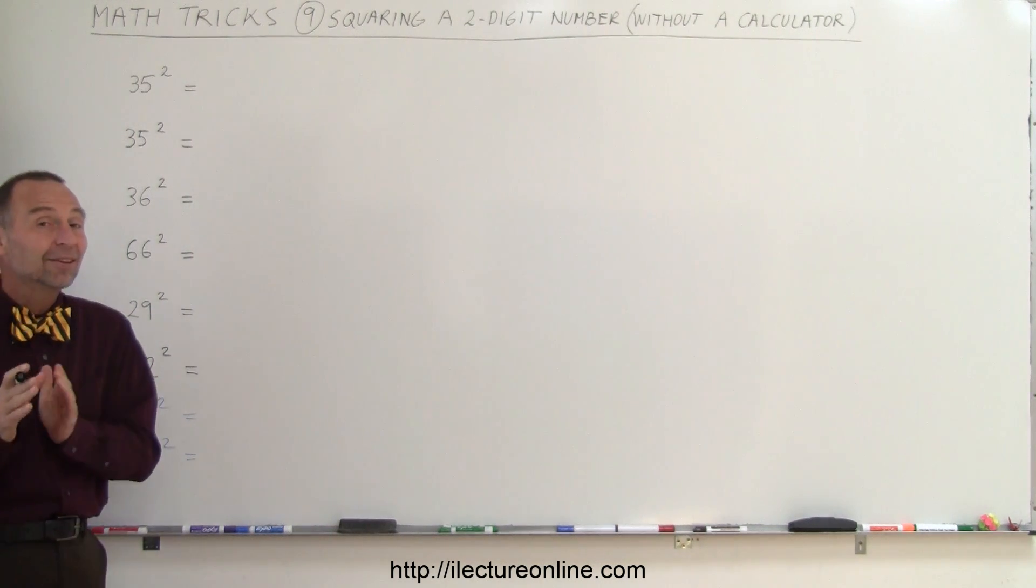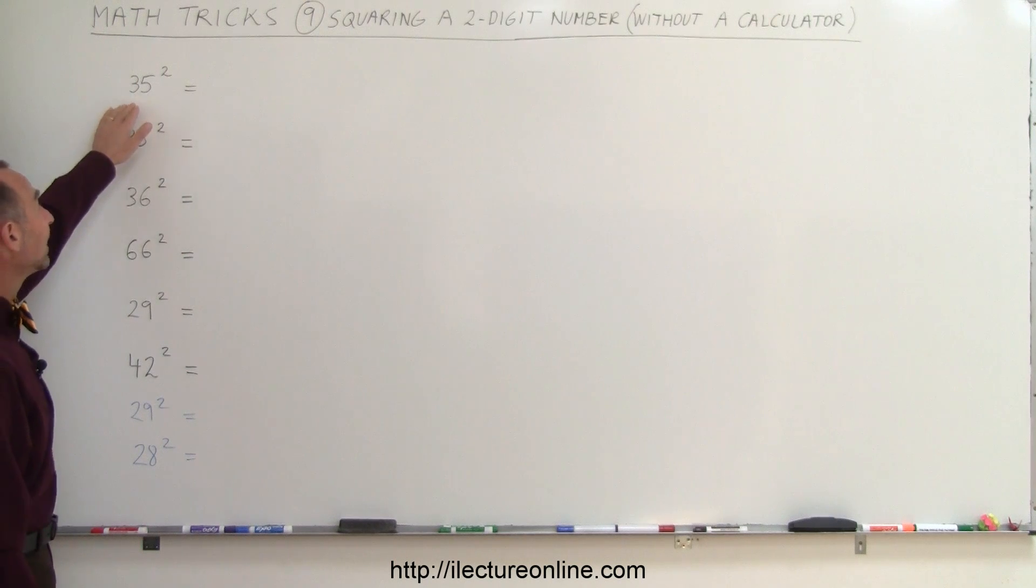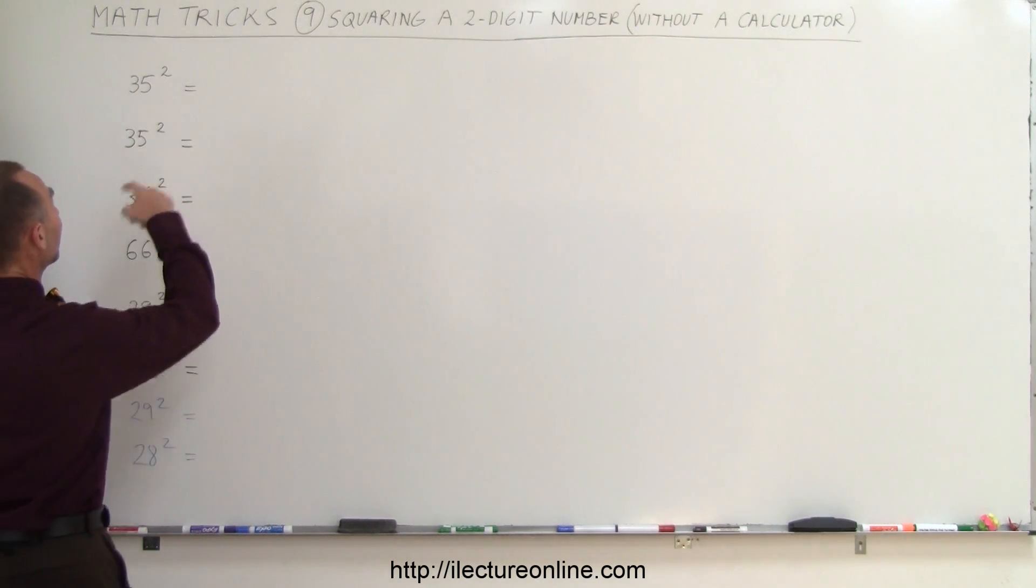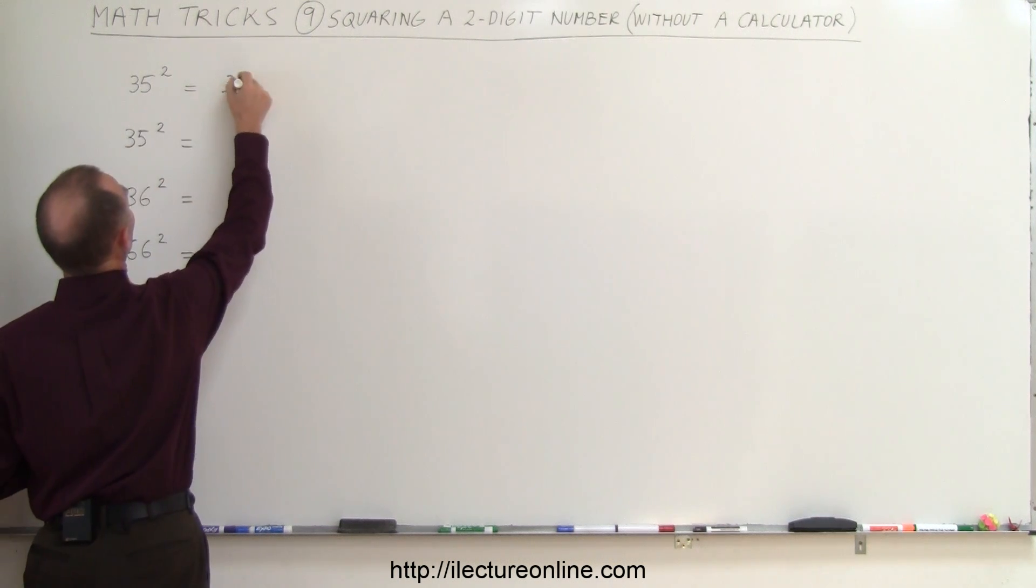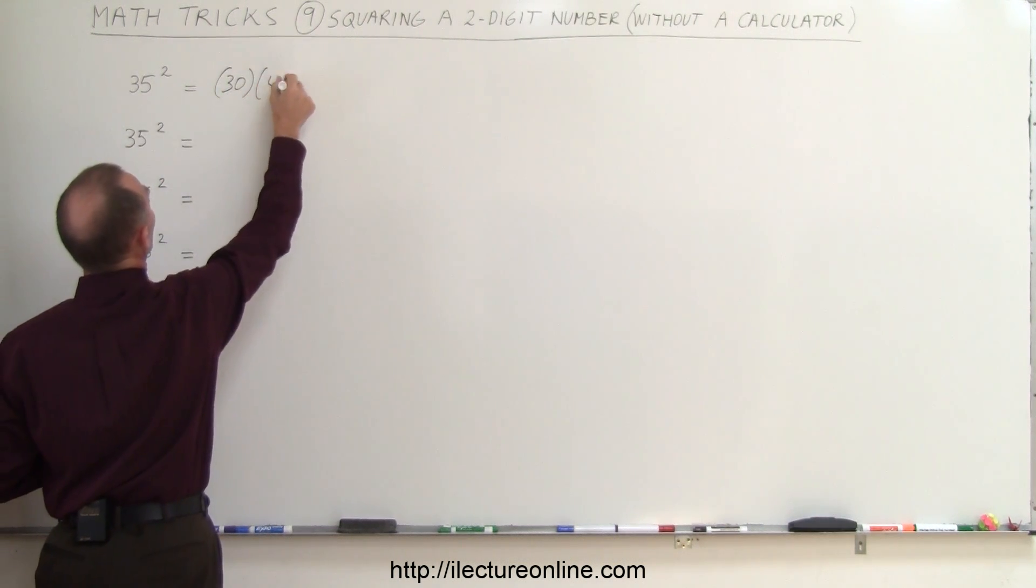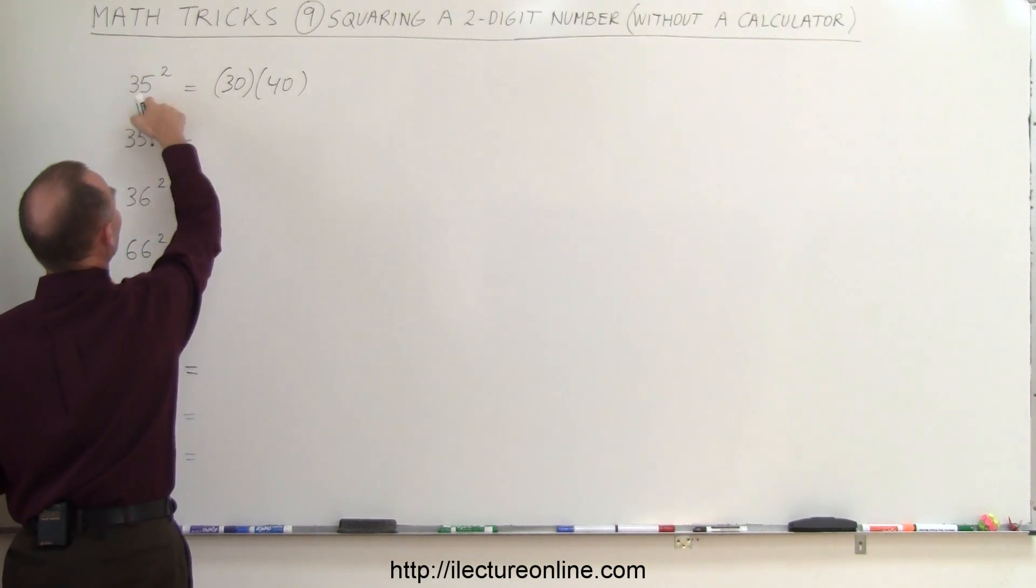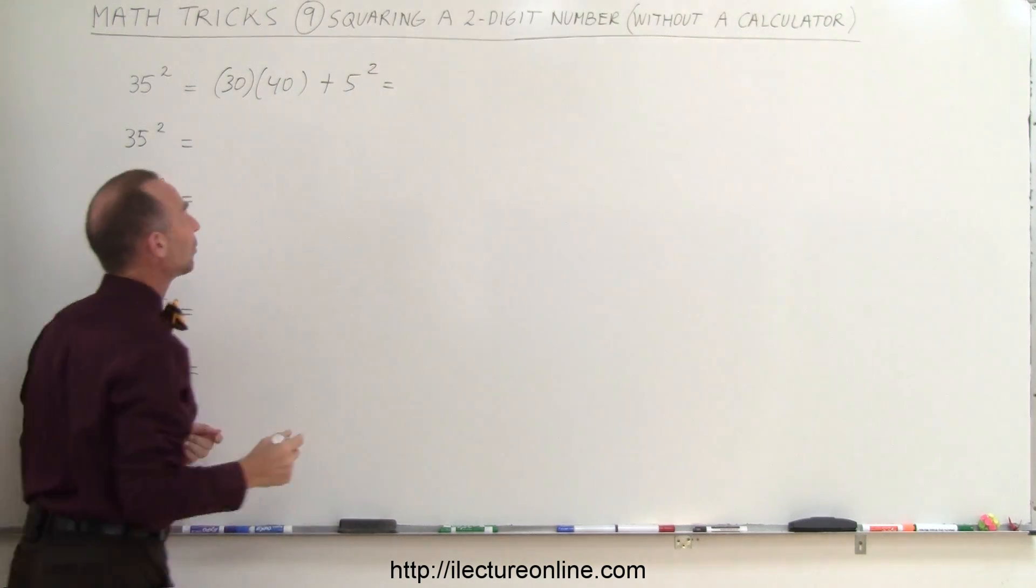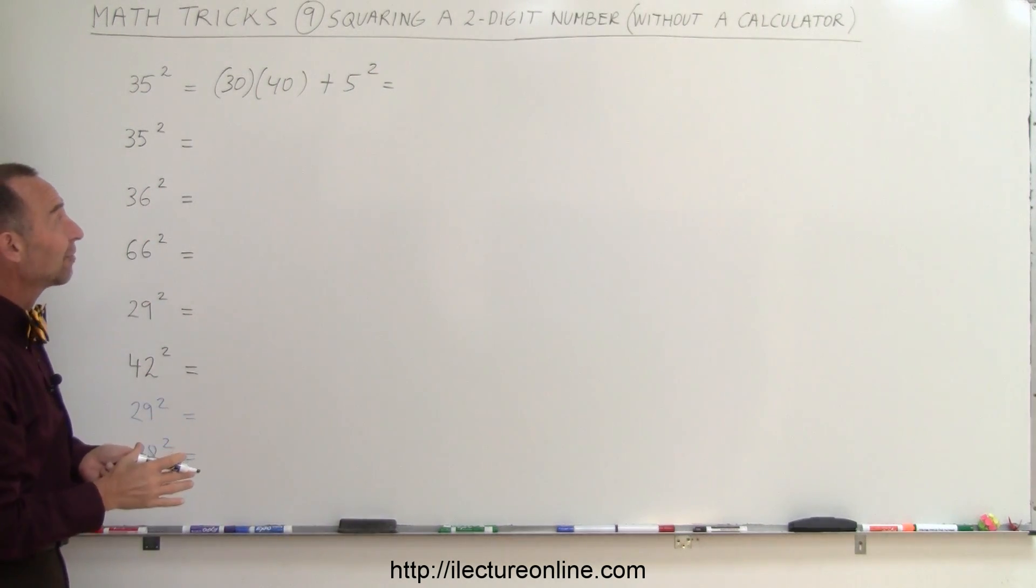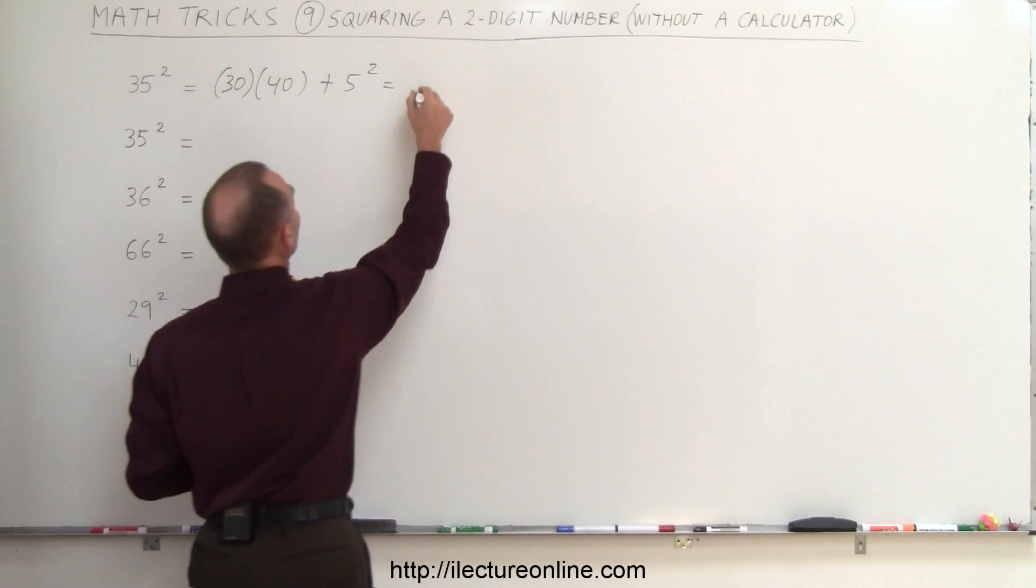Well, if the number ends in a 5, like 35, that's pretty straightforward. The way you do that is you simply multiply, if you have like 35 squared, you go 30 times 40. So you subtract 5, you add 5, you multiply those two numbers together, and then you add the last digit squared, and so that would be 1200 plus 5 squared is 25. The answer would be 1225.